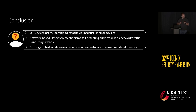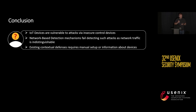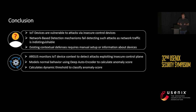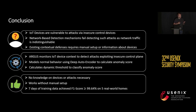To wrap it up: IoT devices are vulnerable to contextual attacks because these attacks cannot be detected by existing network intrusion detection-based systems, as the network traffic is indistinguishable from benign actions. Existing defenses have a number of shortcomings — for example, they require additional knowledge about devices, require manual setup, or are restricted to known attacks. Argus detects contextual attacks by modeling benign behavior using a neural network and calculating anomaly scores, classified using a dynamically tuned threshold. This enables Argus to detect attacks without any knowledge about the devices or attacks, without manual configuration, and with seven days of training data we achieve an F1 score of at least 99.64%.